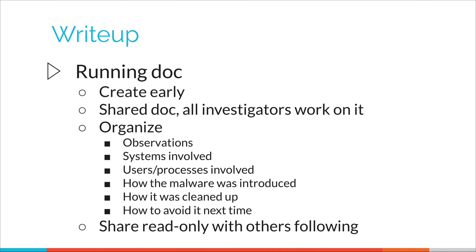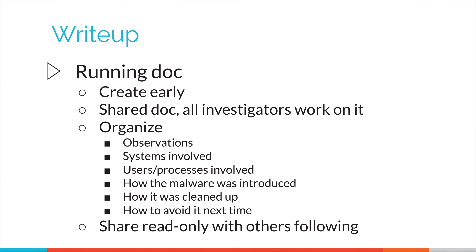The final report should have an executive summary — probably no longer than two or three paragraphs — at the top, followed by the main technical report covering: what happened, what you found, how you cleaned it up, and how to avoid it happening again. Regarding people involved, consider a blameless postmortem rather than singling people out for what was often just a reasonable mistake. Share the final report read-only with anyone who needs to know, and have a brief conversation with your legal and communications or PR teams.